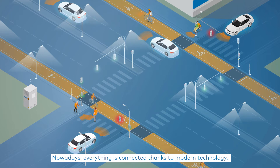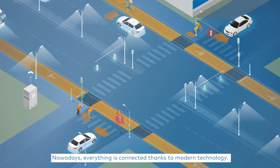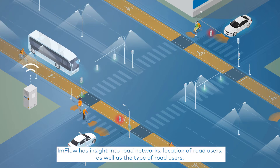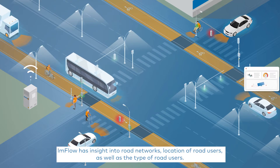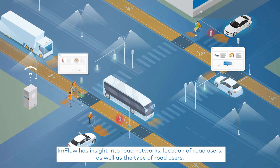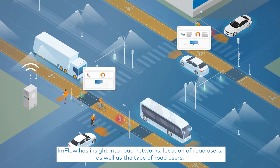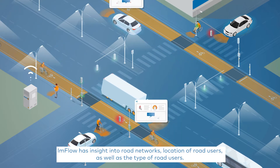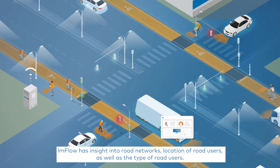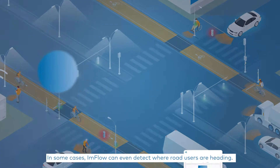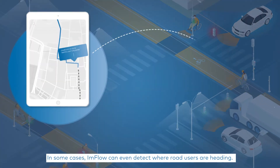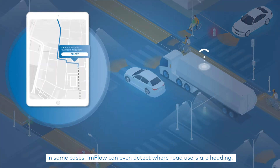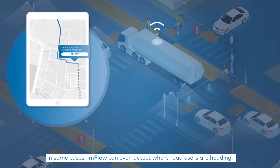Nowadays, everything is connected thanks to modern technology. Inflow has insight into road networks, the location of road users, as well as the type of road users. In some cases, Inflow can even detect where road users are heading.